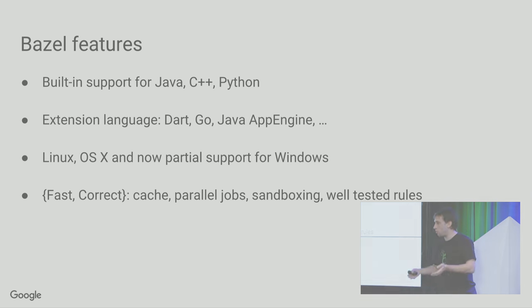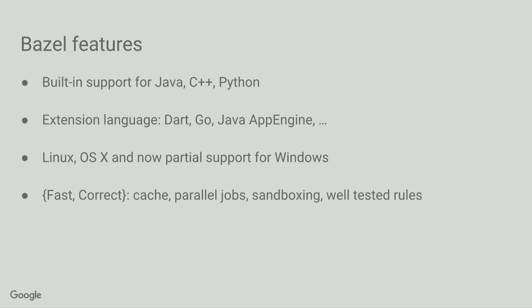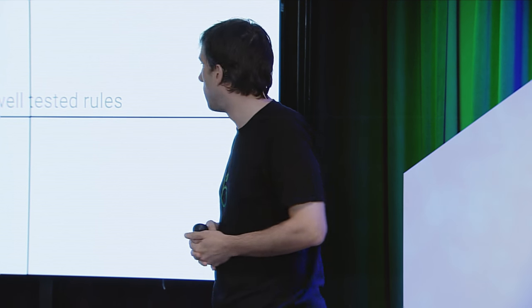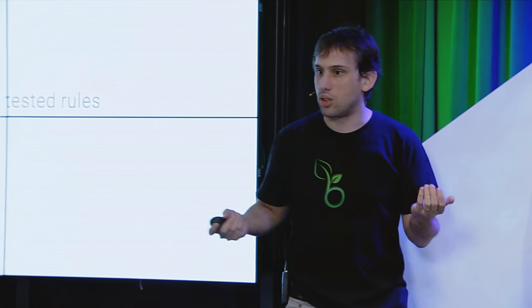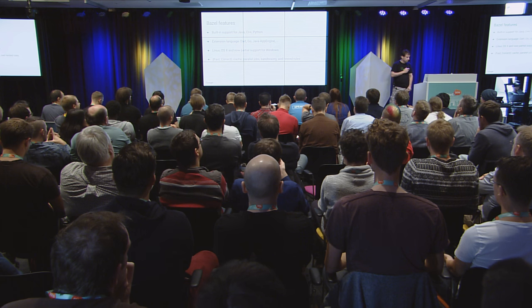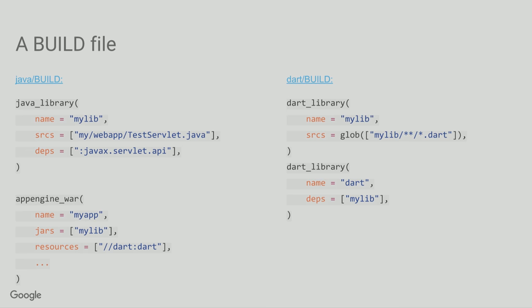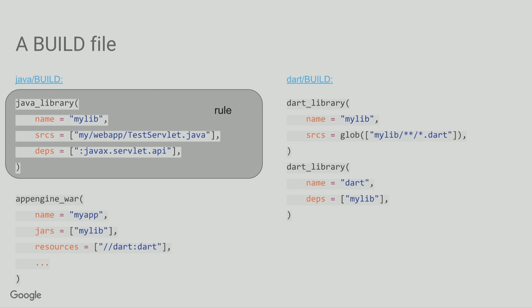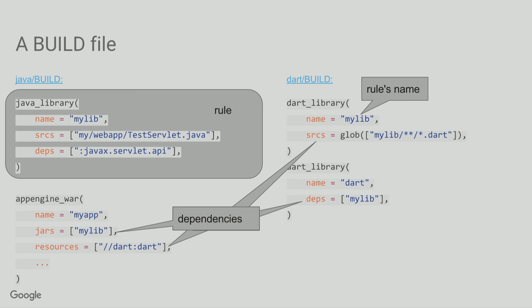We do caching, we run as many parallel jobs as possible, and we also sandbox our actions to make sure we're not modifying inputs. So remember the makefiles? This is a build file — this is what Bazel takes as input. It has a high-level representation of the language. You describe what you want to build as a Java library, a Dart library, you give them a name, and you declare the dependencies. That's all Bazel needs to actually perform its jobs.